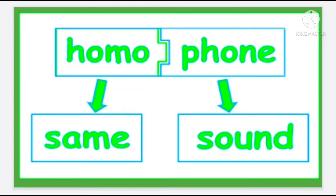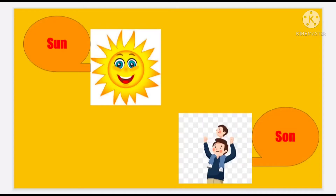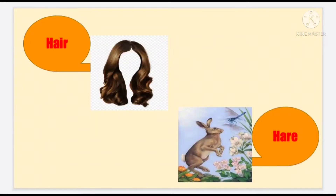Let us see some examples. See the pictures. Sun and son — the spelling is different, same sound, different meaning. Next, hair and here — hair is the same sound, different meaning, different spelling.